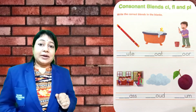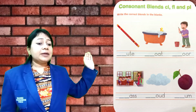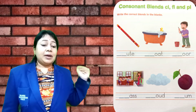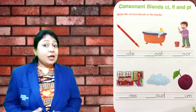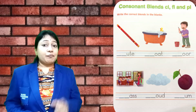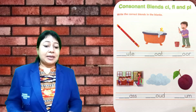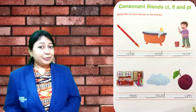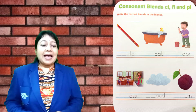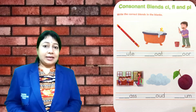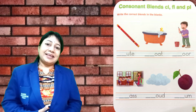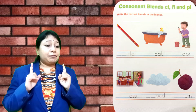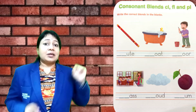Now move to the next page, page number 23. Consonant blends: CL, FL, and PL. Write the correct blends in the blanks. There are pictures — you need to recognize them and write the correct blend. For example, the first picture is a flute: F, L, U, T, E — flute. You have to recognize the rest of the pictures yourself and write the correct blends.